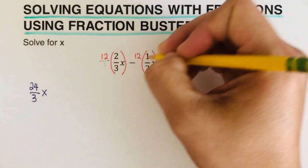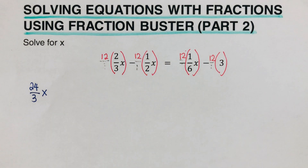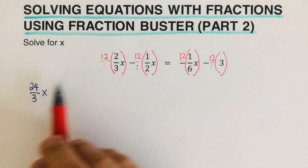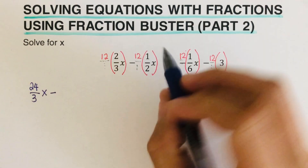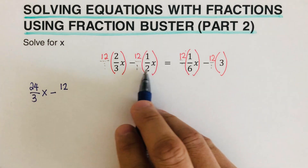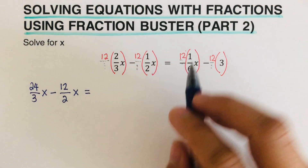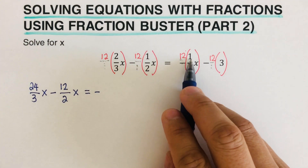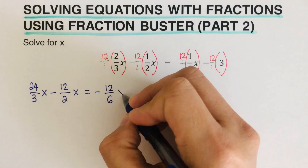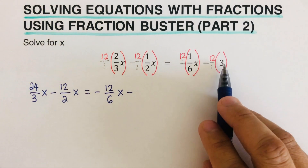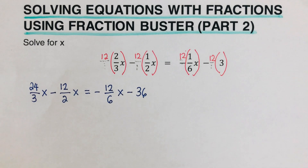Each term has an invisible denominator of 1, so we don't need to write it. For the second term: 12 times 1 is 12 over 2, giving 12/2 x. On the right side: 12 times 1 is 12 over 6, so we get 12/6 x, and then minus 12 times 3 which is 36.